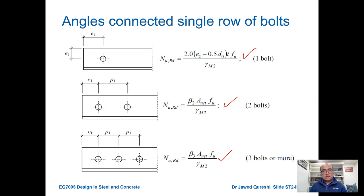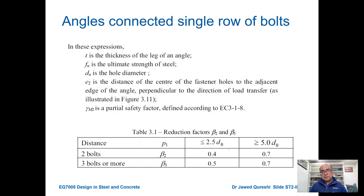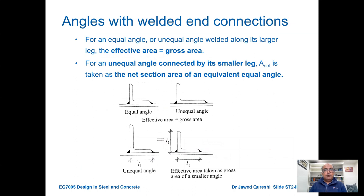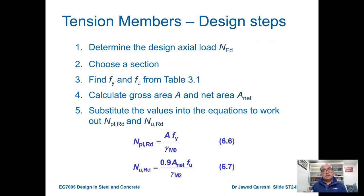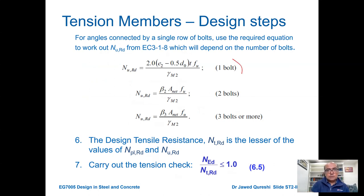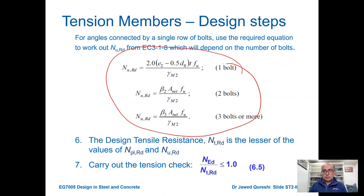Beta 2 and beta 3 are reduction factors. E1 is the distance from the end to the centerline of the bolt in the direction of applied shear. E2 is perpendicular to the applied shear, from the center of the bolt to the end. P is the pitch — the distance between two bolt holes. If P1 is less than or equal to 2.5 D-naught, we use those values for beta 2 and beta 3; if P1 is greater than 5 D-naught, we use the other values. For an equal leg angle or unequal leg angle welded along its larger leg, the effective area equals gross area. For an unequal angle connected by its smaller leg, A-net is taken as the net area of the equivalent equal leg angle. The design process is similar, with the only difference being the NURD formula for leg angles.